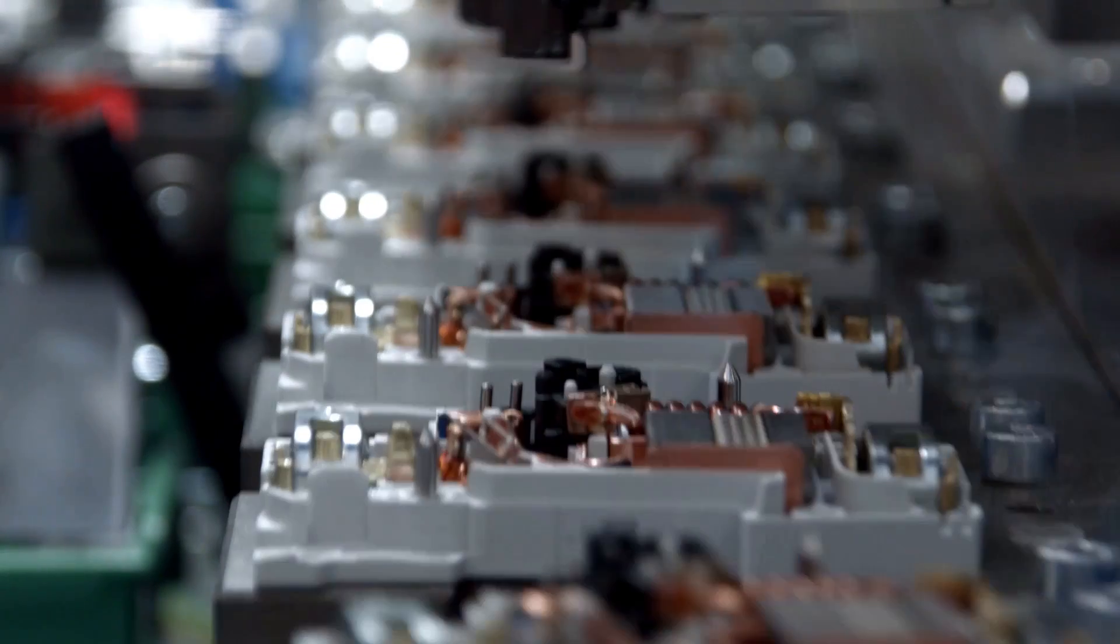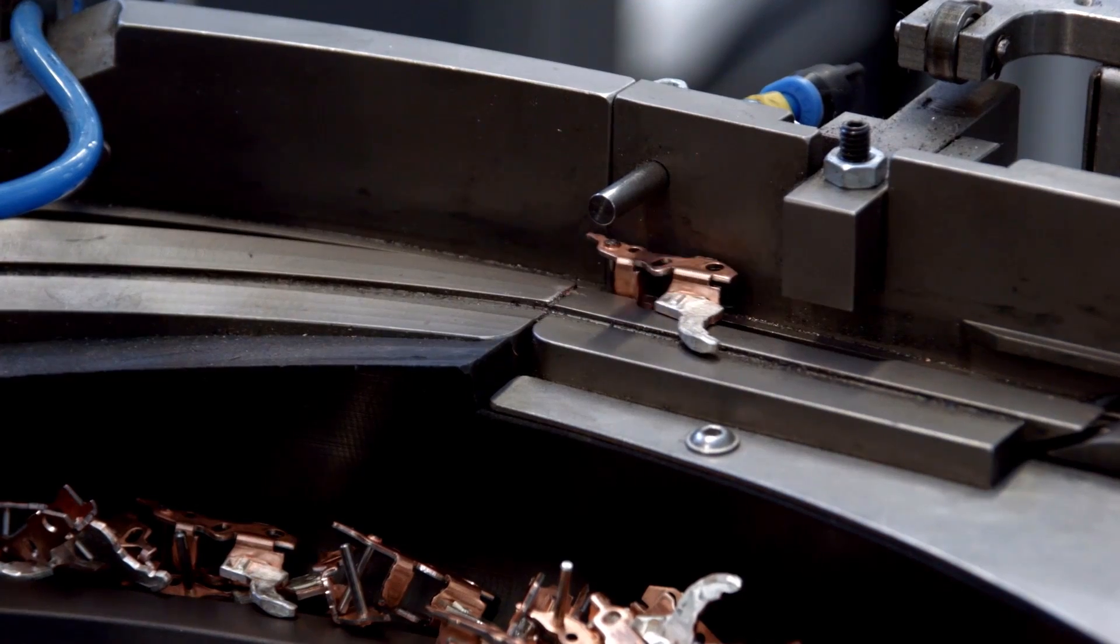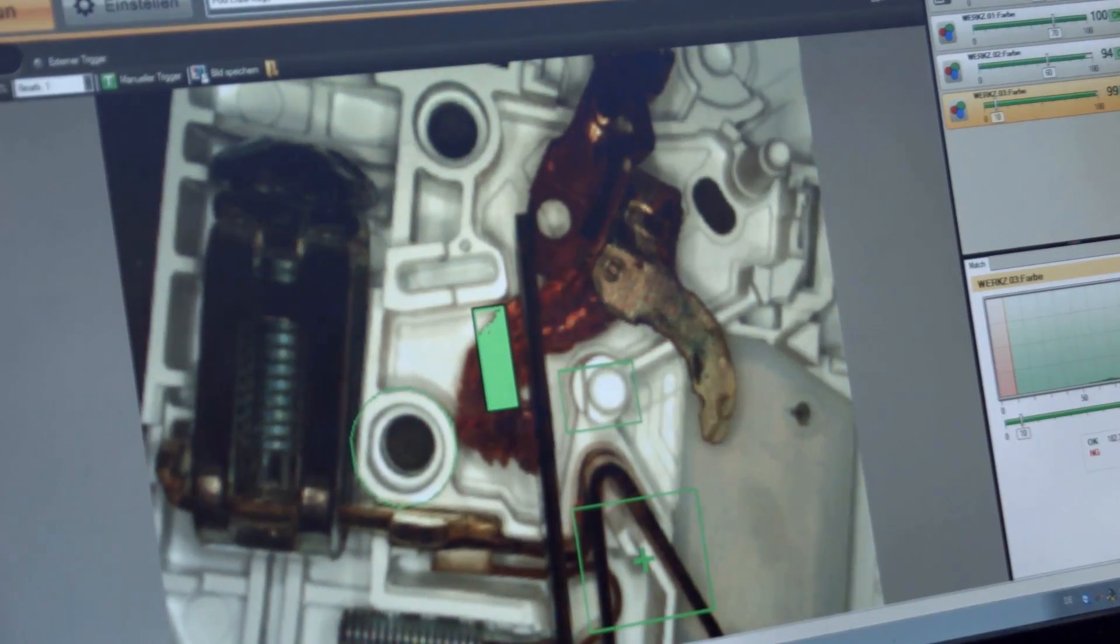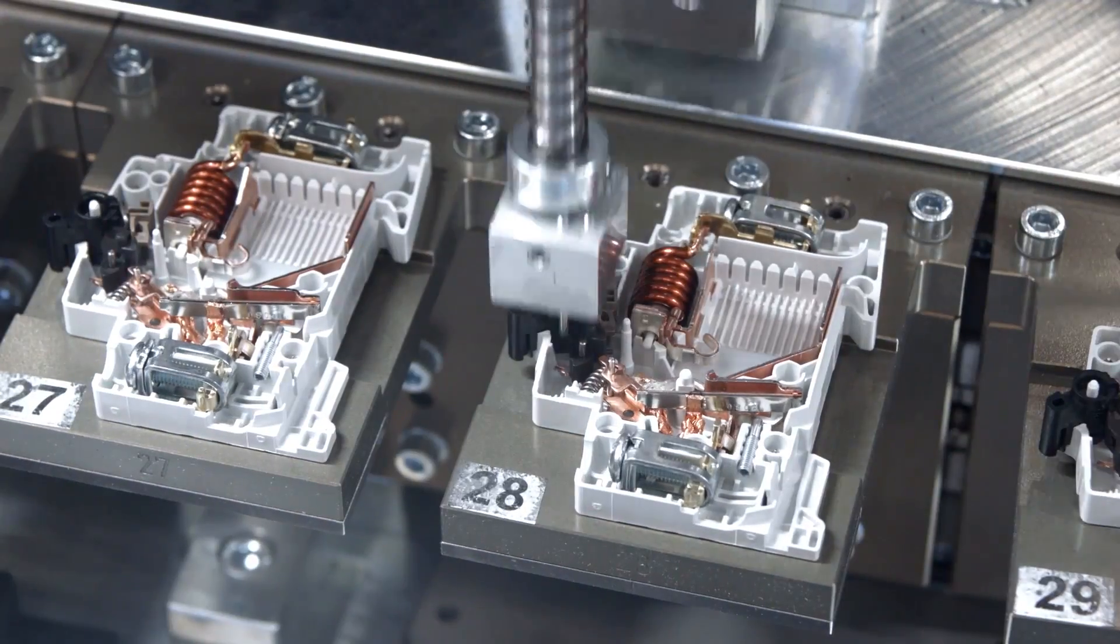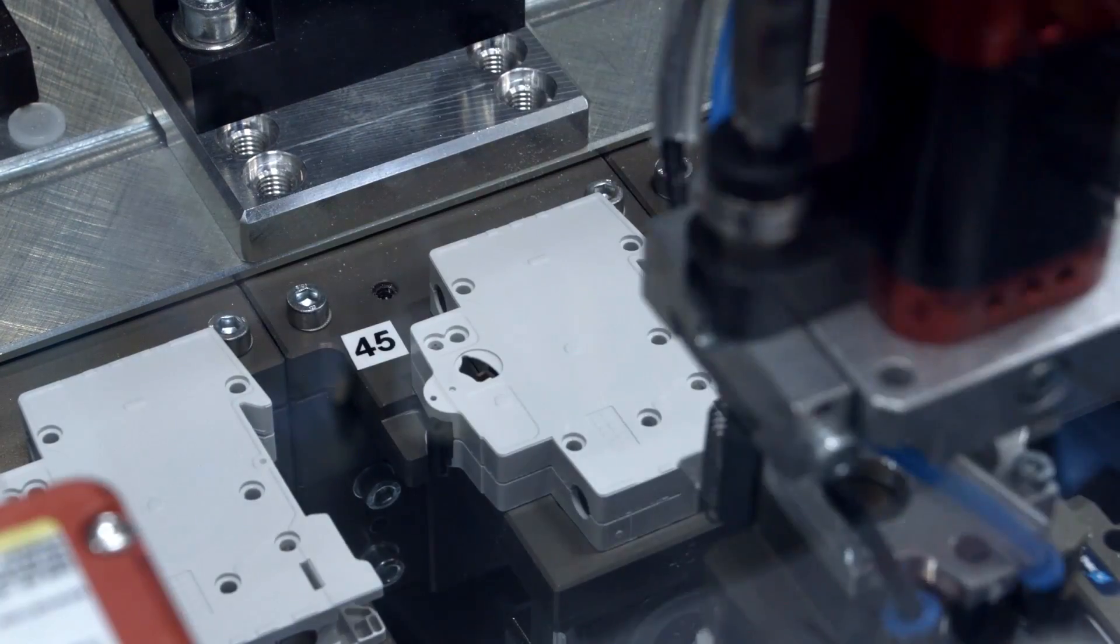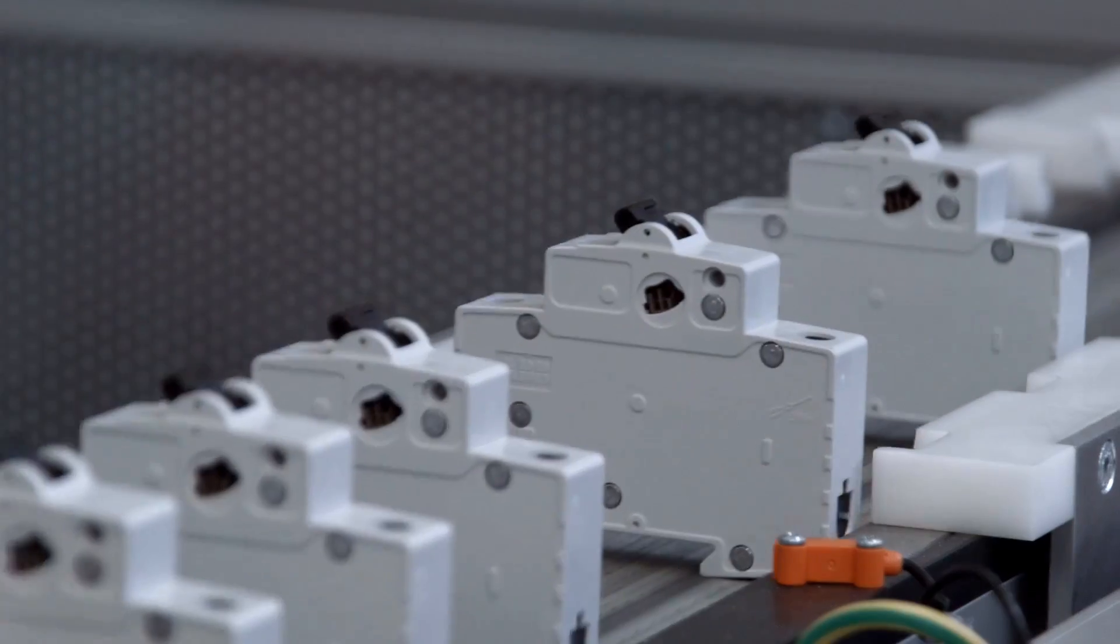Cameras visually compare each component, triggering self-correction processes if specifications are not met. Each circuit breaker has a unique QR code, which enables full traceability from the factory to where it's installed.